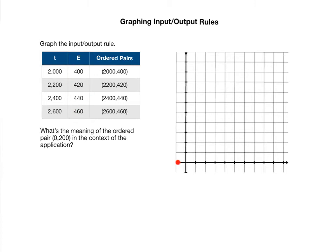So our input axis, which is always the horizontal one, is going to be our T-axis in this case. And our vertical axis is going to be our E-axis because those are our outputs. Don't forget that the origin right here has input 0 and output 0. And now our input values that we have on our table are 2,000 up to 2,600. And notice they're jumping up by 200s. So it's probably a good idea to count by 200s.